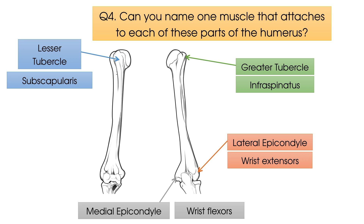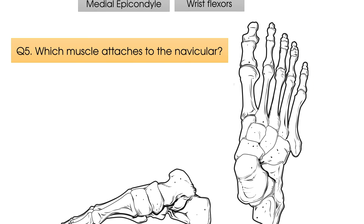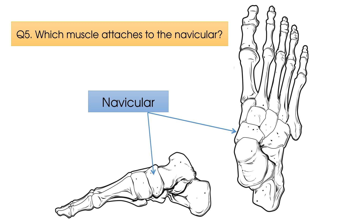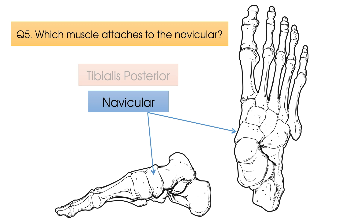Question number five: there is one very important muscle that attaches to the navicular — which muscle is it? That very important muscle is the tibialis posterior, which has a major role in supporting the medial arch of the foot.